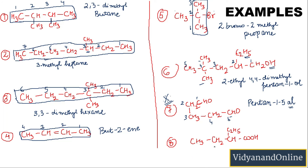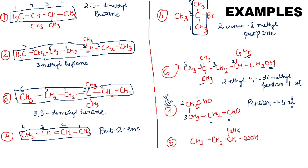The last example contains a carboxyl group. We treat the carboxyl carbon as part of the chain. The chain has 1, 2, 3, 4 carbons. It contains one branch (an ethyl group) and the carboxylic acid functional group, so the suffix will be '-oic acid'. The branch is an ethyl group at position 2. The name is 2-ethylbutanoic acid.